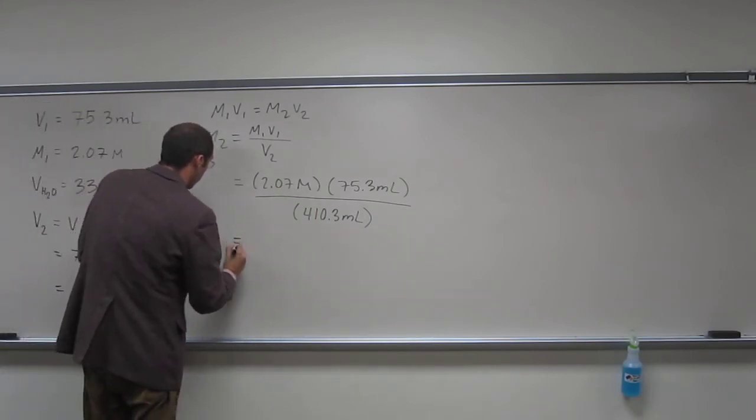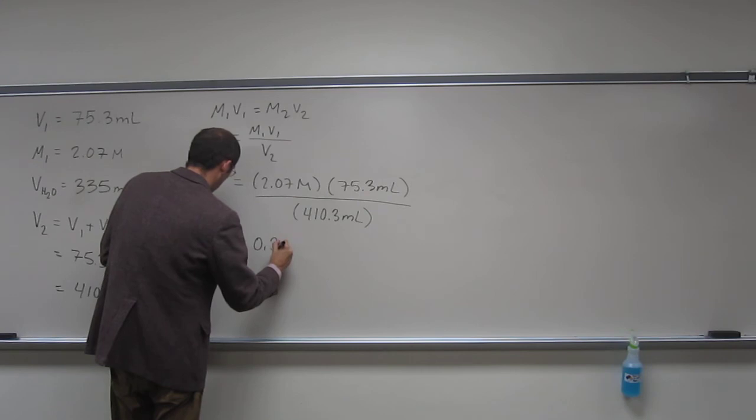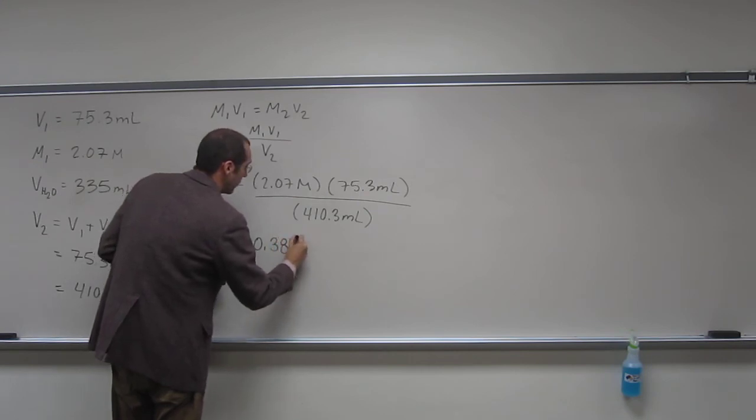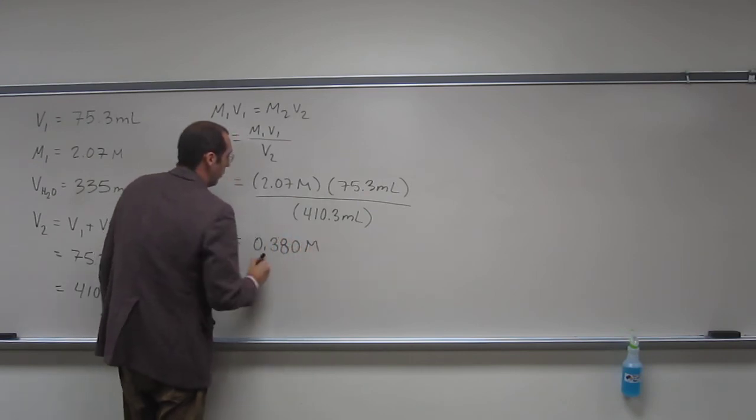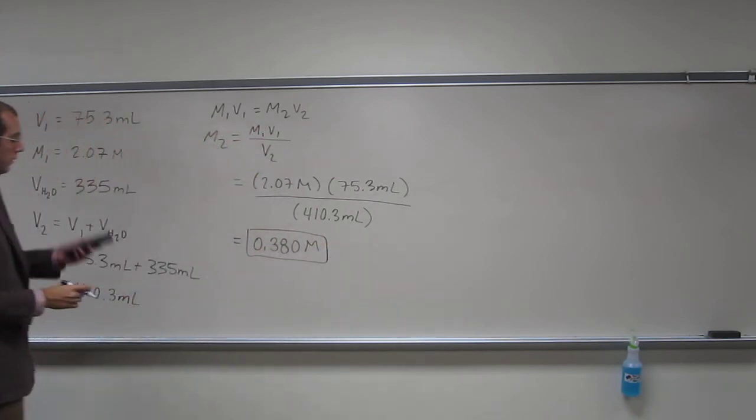So, if we solve this to 3 sig figs, we get 0.380 molar. It's the new concentration of calcium chloride when we add that 335 mils of water.